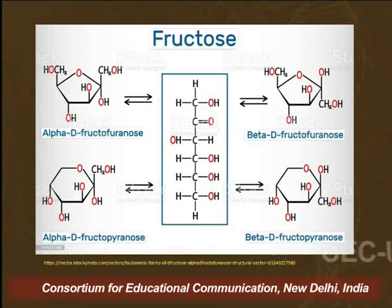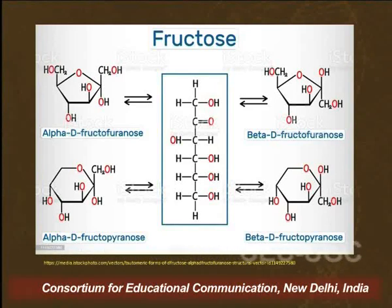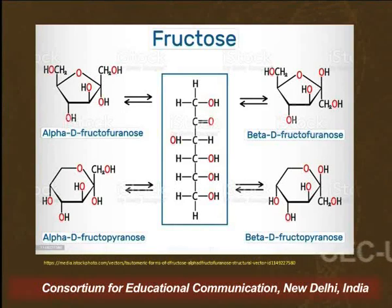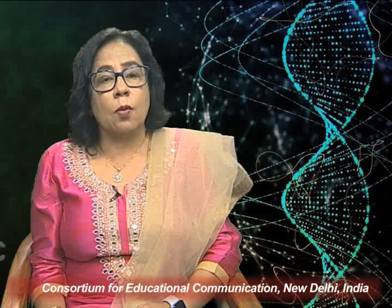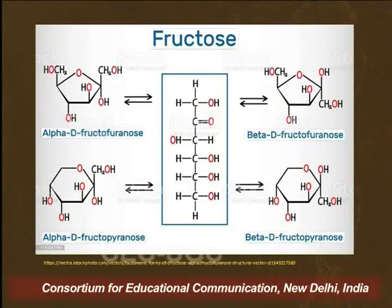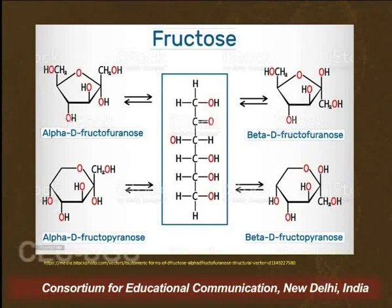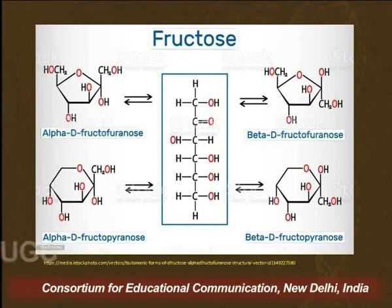We know that ketones react with alcohols in the presence of dilute hydrochloric acid to give us hemiketals, and then that hemiketal reacts with a second molecule of alcohol to give us a ketal. When we look into this molecule, we find it has a ketonic group as well as five alcoholic groups. Since it has five alcoholic groups, we can have intramolecular hemiketal formation. Because of that hemiketal formation, this molecule can occur in two ring forms.